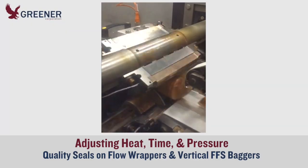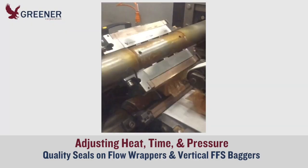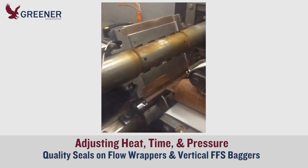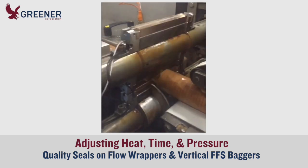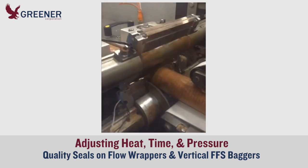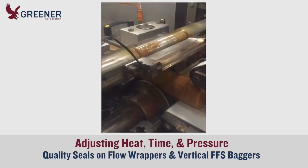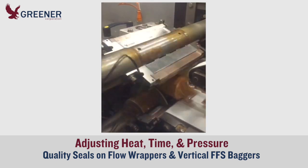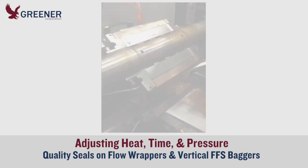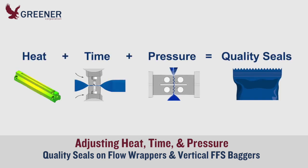The right combination of heat, time, and pressure is required to produce quality seals on form fill seal baggers and flow wrappers. These essential sealing elements are closely linked. Adjusting one can change the others and cause unexpected problems. This Greener Tech bite reviews the function of and relationships between heat, time, and pressure so you can better understand and anticipate the full effects of your adjustments.